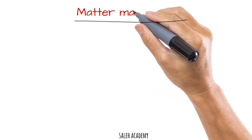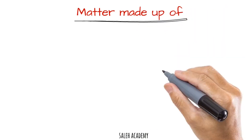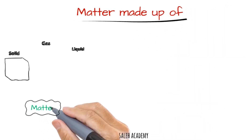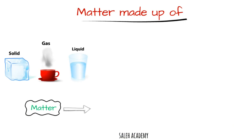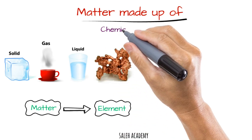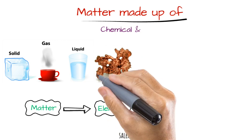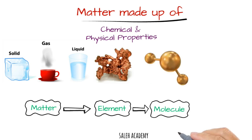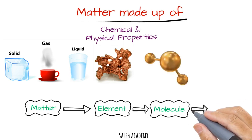Now in today's video we will learn more about physical matter. All matter is made up of substances called elements, which have specific chemical and physical properties. Elements are made up of molecules, and molecules are made up of very tiny particles called atoms.